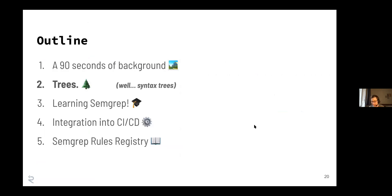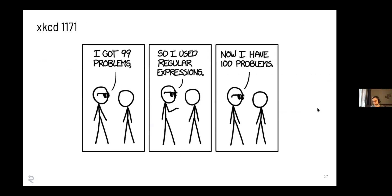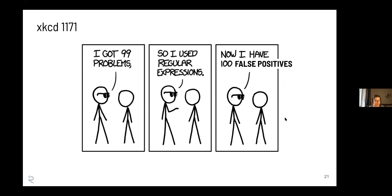I want to talk about some static analysis theory - it won't be really hardcore theory. You might ask: if I have this issue where I cannot have a decorator on a function with request args inside it, why don't I just use regex to figure out when that's happening? The issue is captured well in this XKCD - if you use regex, now you have 100 problems, or in our case, 100 false positives when trying to detect these security issues.